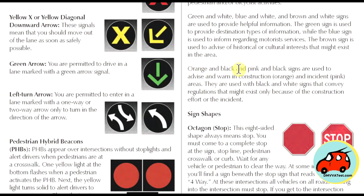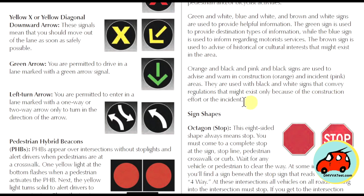Orange and black and pink and black signs are used to advise and warn about construction and incidents in the area. They are used with black and white signs that convey regulations that may exist only because of construction efforts or the incident.